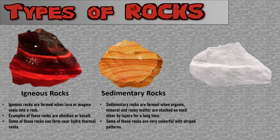Sedimentary rocks are formed when organic minerals and rocky matter are stacked on each other layer by layer for a very long time — like centuries or even decades. Some of these rocks are very colorful with striped colorful patterns.